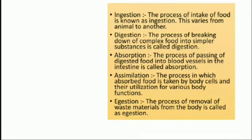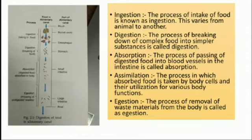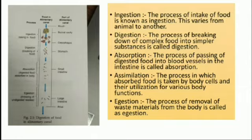And finally egestion — the process of removal of waste material from the body — takes place through the anus. In the diagram, you can see how food passes through the alimentary canal. From the mouth it goes to the buccal cavity, then to the food pipe also known as the oesophagus, then to the stomach where food is broken down by the action of hydrochloric acid, pancreatic juice and bile juice. In the small intestine the food is absorbed by the body, and from the small intestine it passes to the large intestine where undigested food is thrown out through the anus.